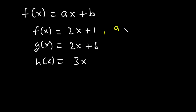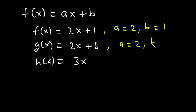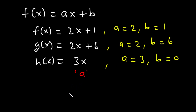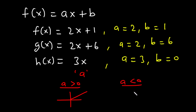For f(x), a is equal to 2 and b is equal to 1. For g(x), a is equal to 2 and b is equal to 6. For h(x), a is equal to 3 and b is equal to 0. The graph of a linear function gives a straight line. If a is greater than zero, the line slopes upward; if a is less than zero, it slopes downward.